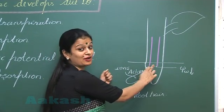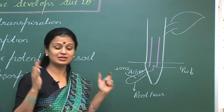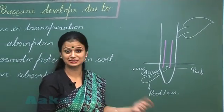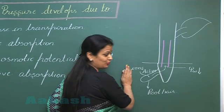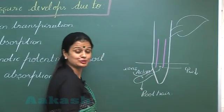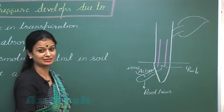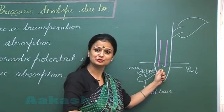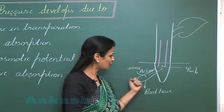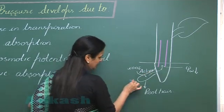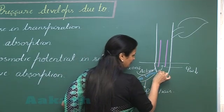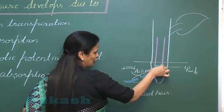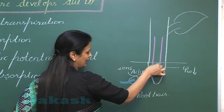Due to the accumulation of ions, the water potential in the xylem channels has decreased. This has led to the formation of a water potential gradient — water potential is higher in the soil and lower in the xylem. So the water will move from high concentration to low concentration, meaning water is absorbed by the plant from the soil along the concentration gradient.